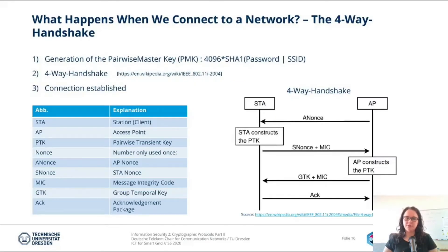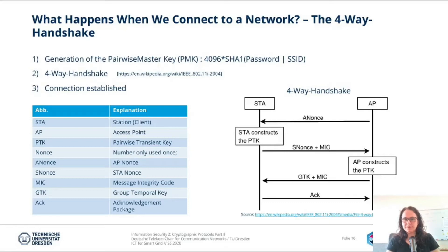Now I want to explain what happens when we connect to a network. There is an important thing: the 4-way handshake. But before we do the 4-way handshake, we have to generate a pairwise master key, short PMK. This is done by hashing 4,096 times with a SHA-1 hash your password and the SSID. The SSID is usually the name and identifier of the network. The PMK is then used for the 4-way handshake.